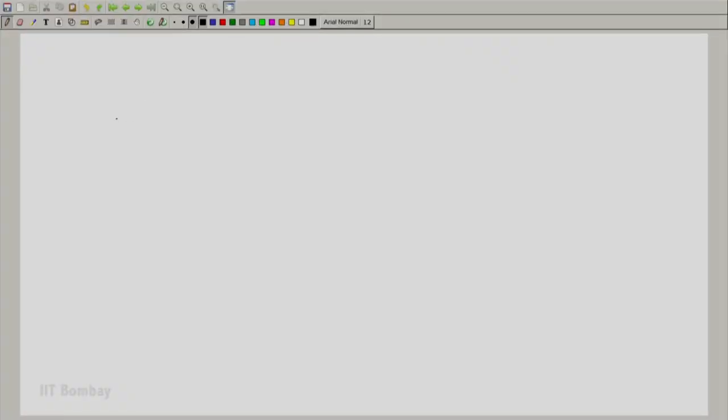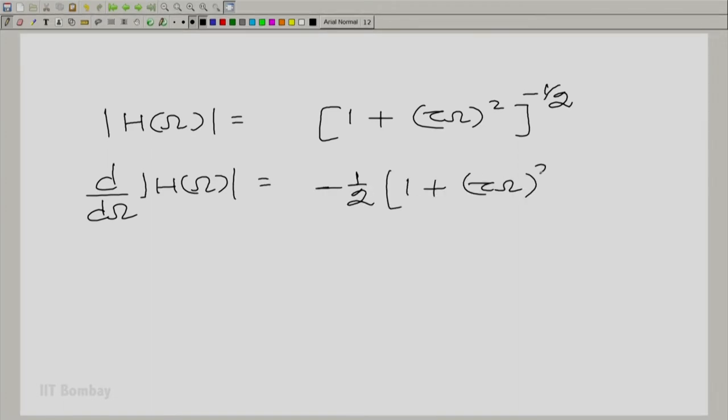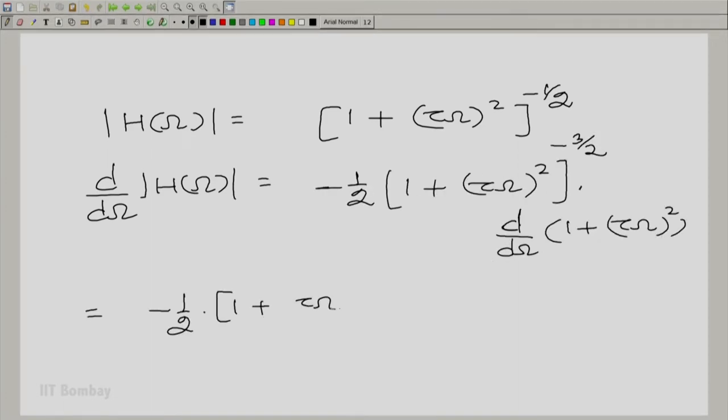Let us find the derivative of the magnitude. Let us write down the derivative explicitly. We have the expression mod H omega can be written as 1 plus tau omega squared to the power minus half. And you can take d by d omega mod H omega, which can be simplified. You have tau squared omega divided by 1 plus tau omega squared to the power 3 by 2 in the denominator.